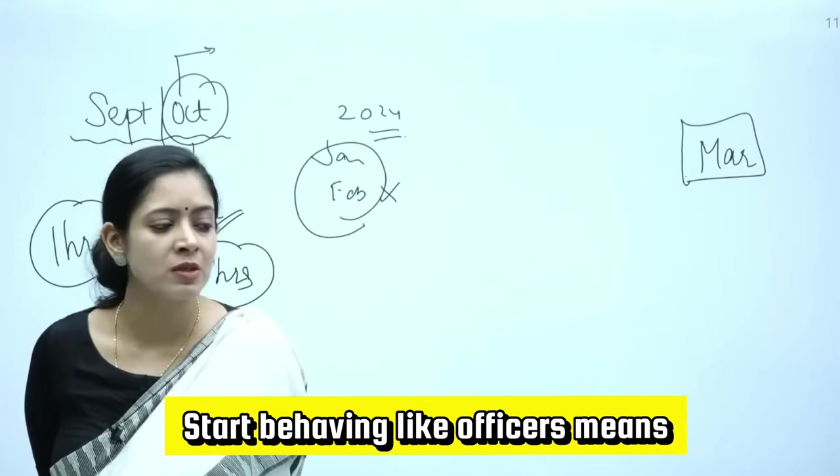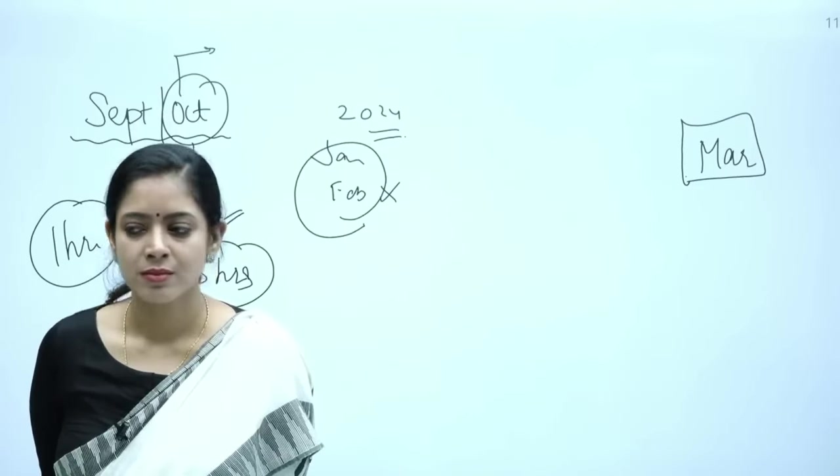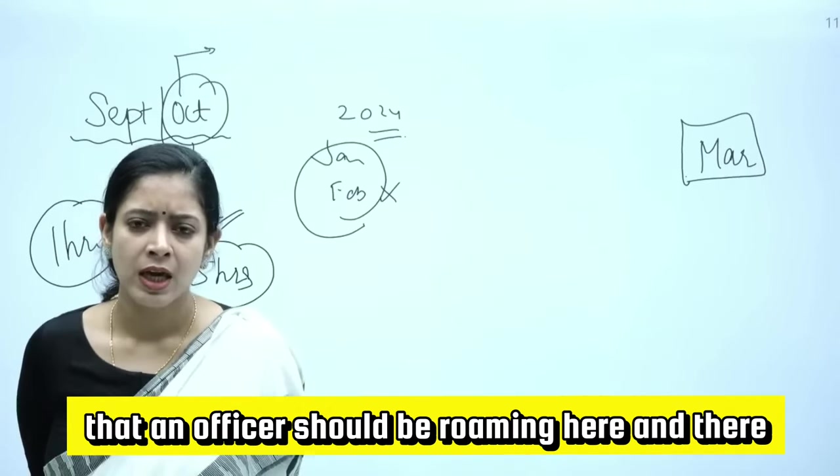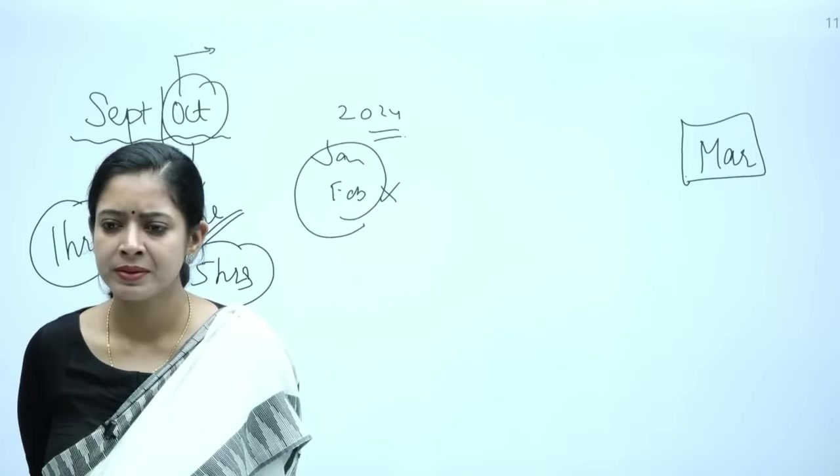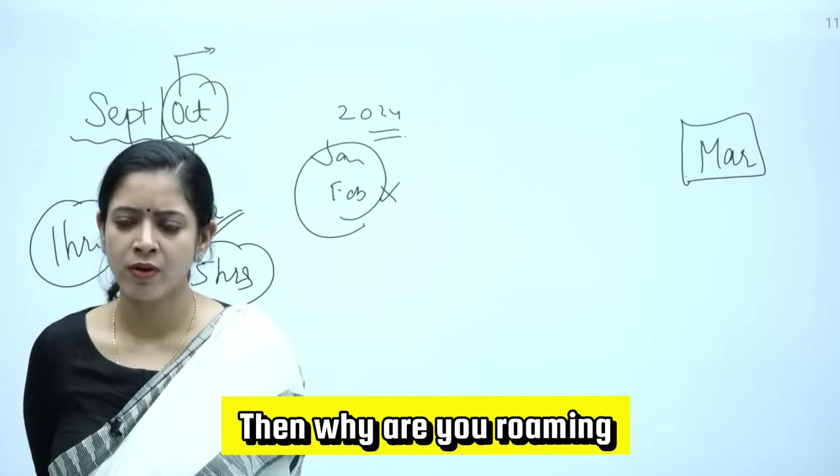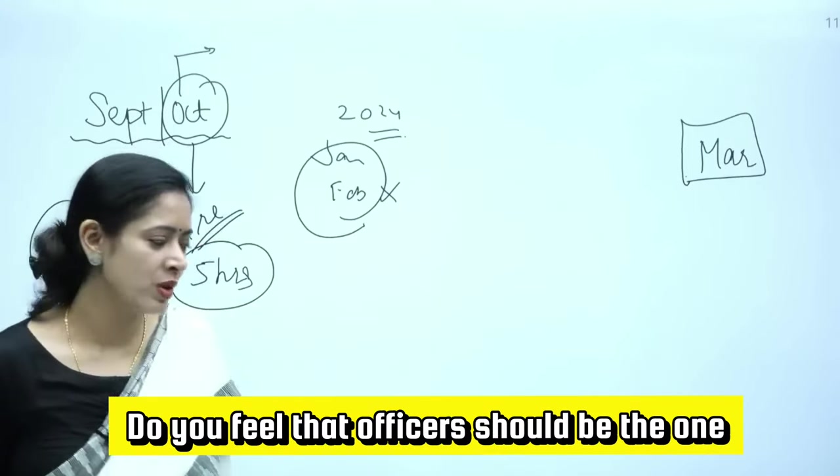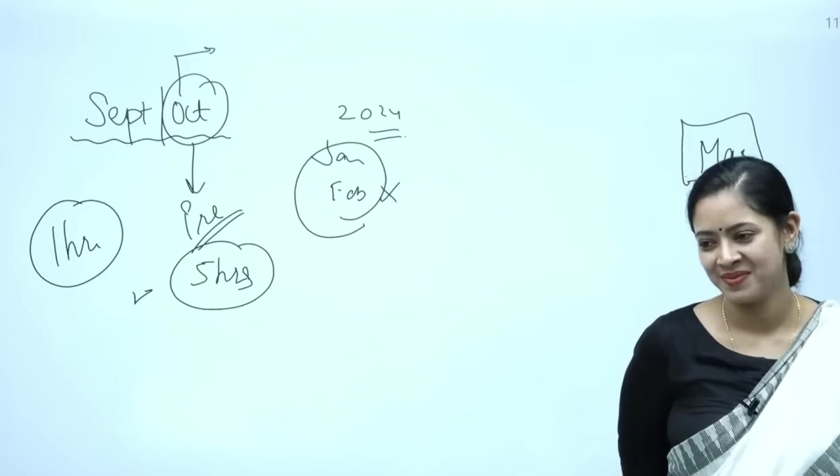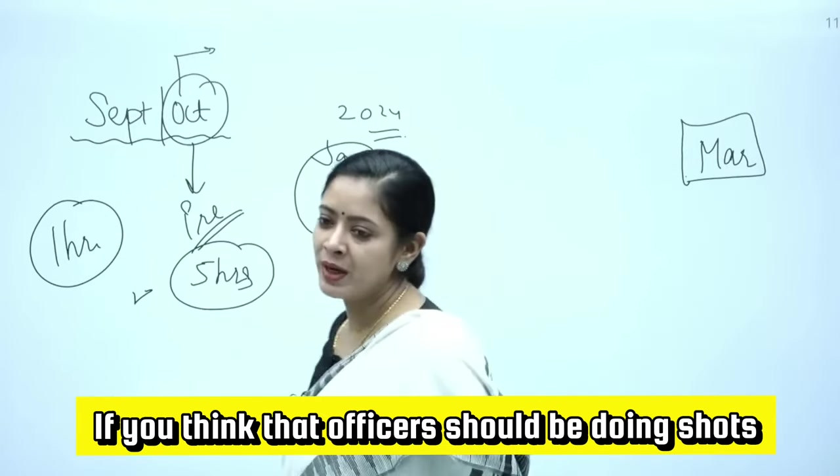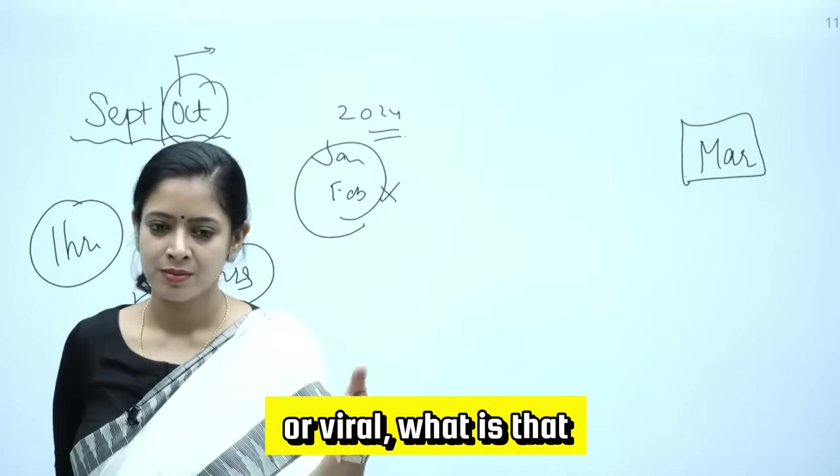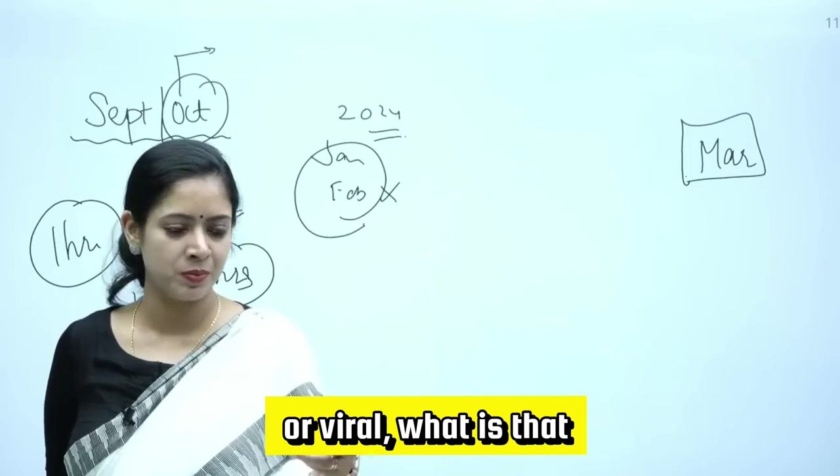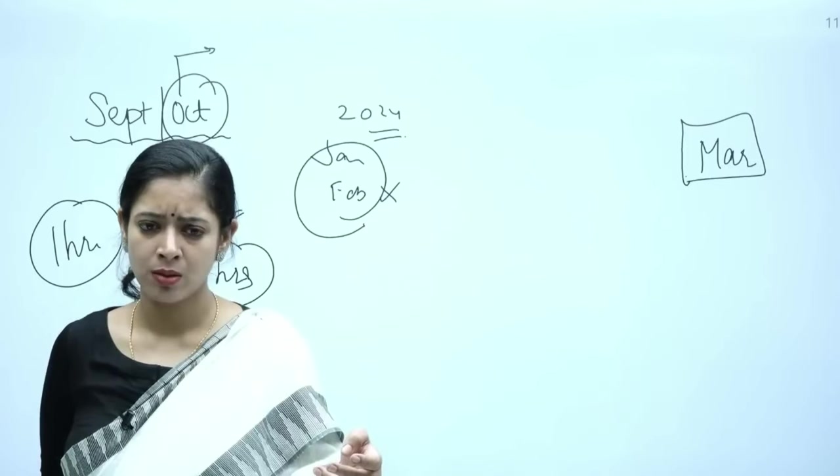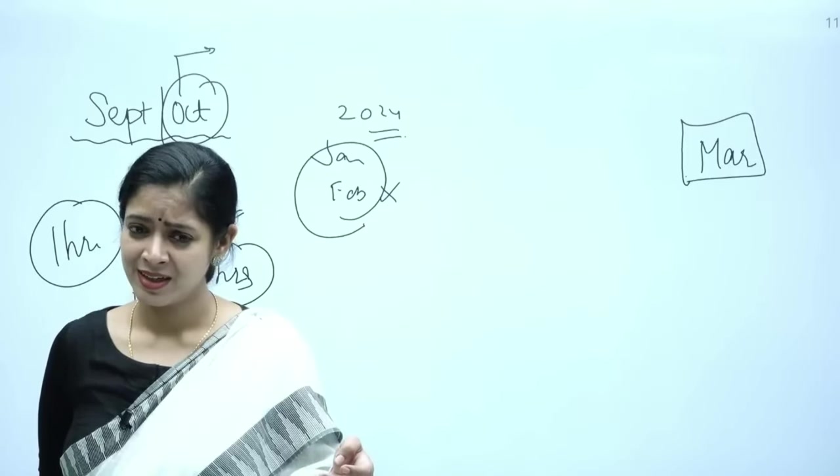Start behaving like officers means discipline. Do you really feel that an officer should be roaming here and there? No, then why are you roaming? Do you feel that officer should be the one who should be making excuses, blaming others? Why are you blaming? If you think that officers should be doing shorts or viral, swiping here and there or watching Facebook too much, should you be doing it?